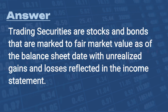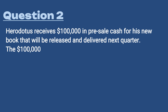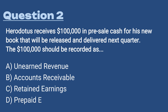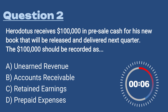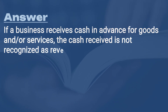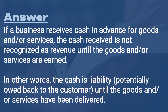Question 2: Herodotus receives $100,000 in pre-sale cash for his new book that will be released and delivered next quarter. The $100,000 should be recorded as: A) Unearned revenue, B) Accounts receivable, C) Retained earnings, D) Prepaid expenses. The answer is A, unearned revenue. If a business receives cash in advance for goods and services, that cash is not recognized as revenue until earned. It is a liability on the balance sheet — not considered the business's cash until the revenue is earned.